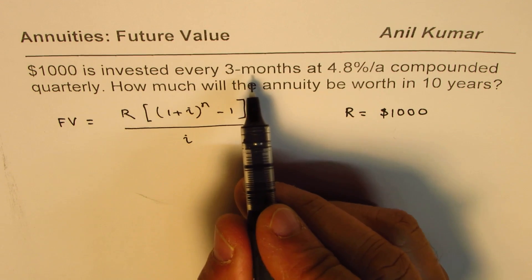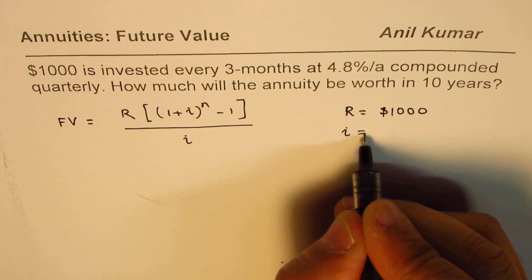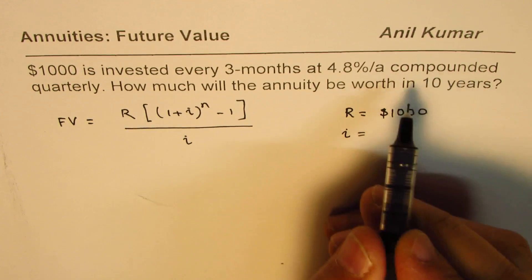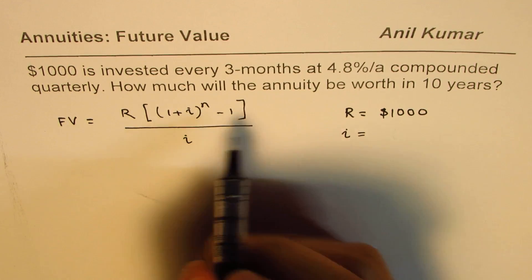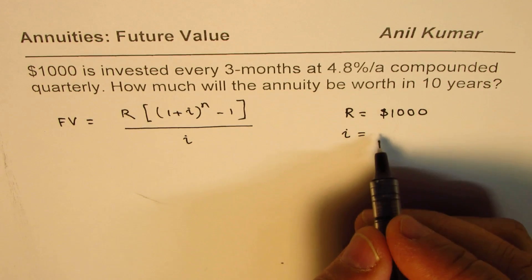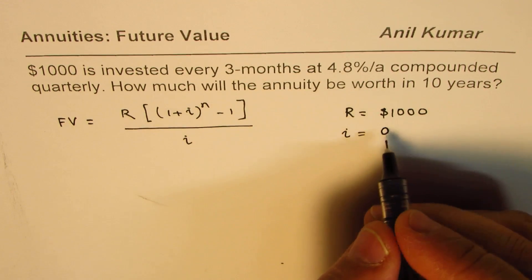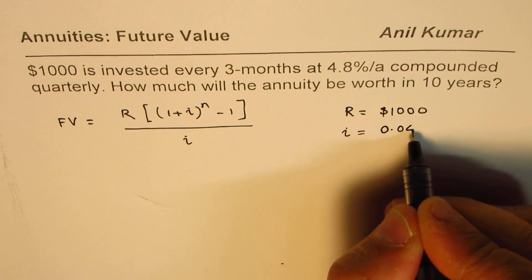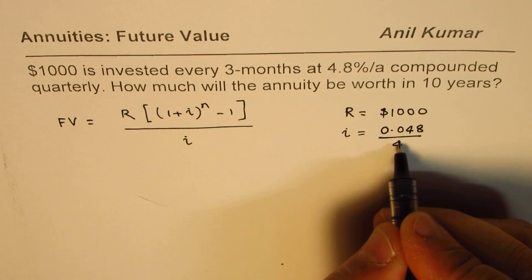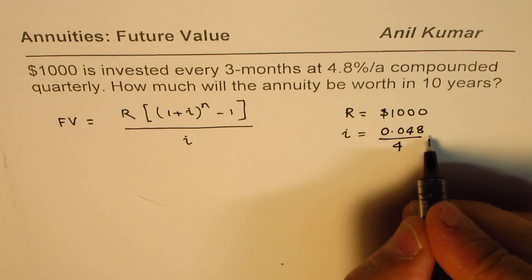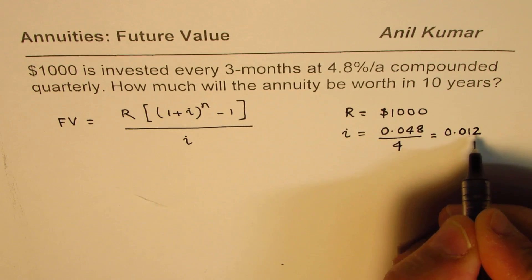So it's being compounded four times. The interest effectively for each compounding period - this interest is not the rate of interest 4.8, it is 4.8% divided by 4. So it is 0.048 divided by 4 quarterly, which gives us 0.012. That's the quarterly interest compounded.